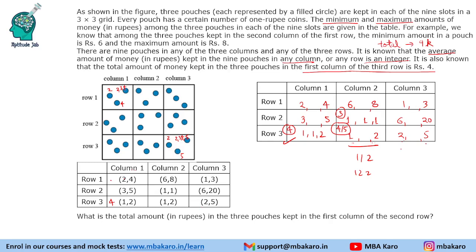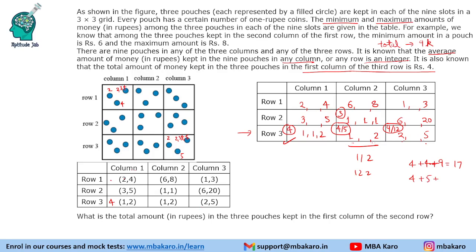Instead of thinking of individual values, let us consider the sum. For the slot with range 2 to 5, the minimum sum is 9 and maximum is 12 — so the sum ranges from 9 to 12. Looking at minimum possible total: 4 + 4 + 9 = 17, and maximum: 4 + 5 + 12 = 21. The only multiple of 9 in between is 18. So the sum here is 18. It can be achieved as 4, 4, 10 or 4, 5, 9.